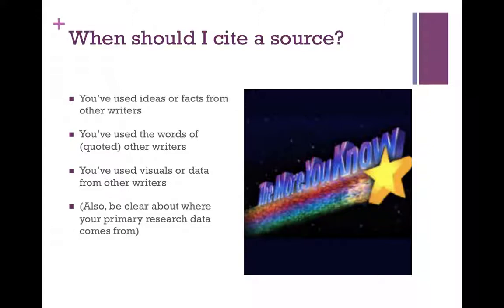When should you cite a source? You should cite any information that comes from another writer — an idea, a fact — even if it's not their exact words. You should obviously cite when you quote or use words from other writers. You should also attribute sources when using visuals or data from other writers. And be clear about where your primary research data comes from — attributive phrasing like 'one participant whom I interviewed said' can help make clear for your readers where information is coming from.